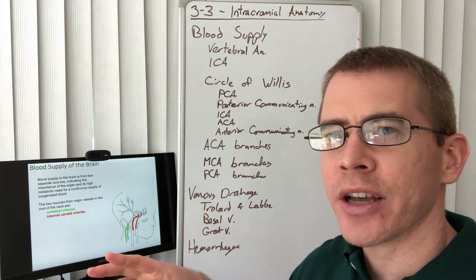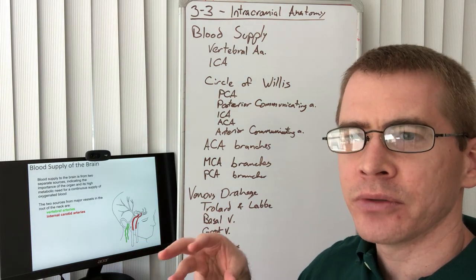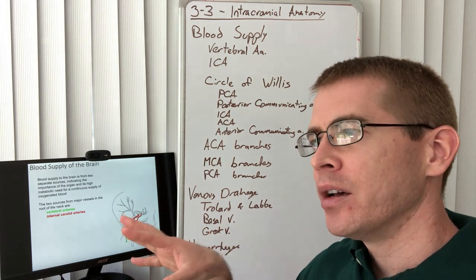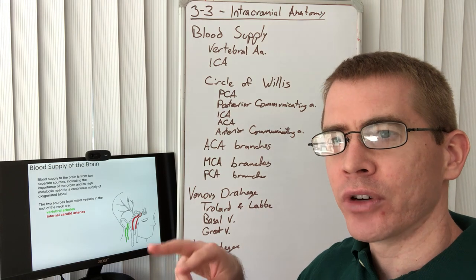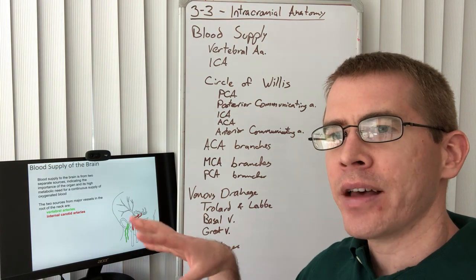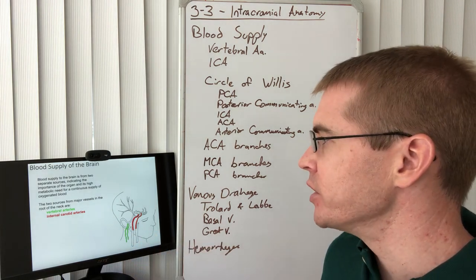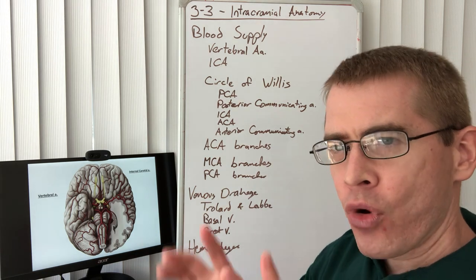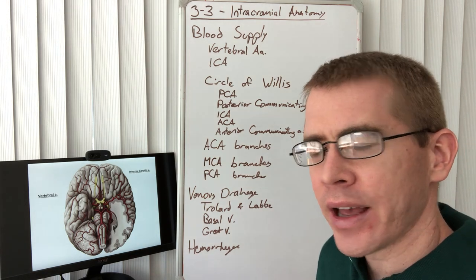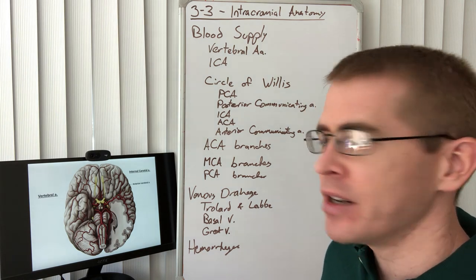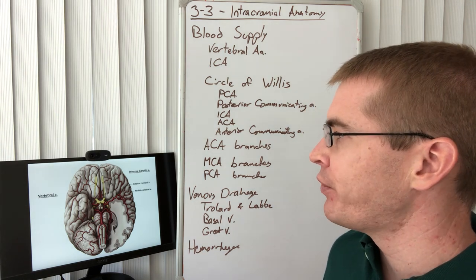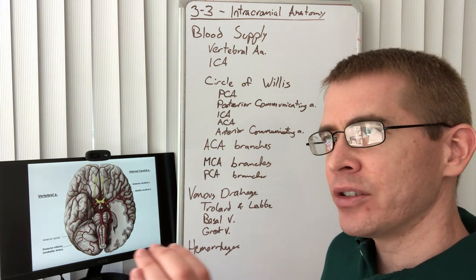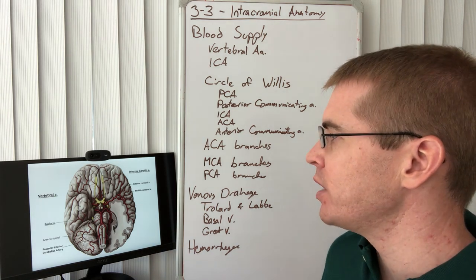Welcome back to the second half of lecture 3-3. We're talking about the blood supply of the brain. The brain itself is supplied by two pairs of arteries: the vertebral arteries and the internal carotid arteries. These two arteries form the main branches that travel to the rest of the brain and supply the circle of Willis, which is the redundant circular anastomotic portion of the brain.